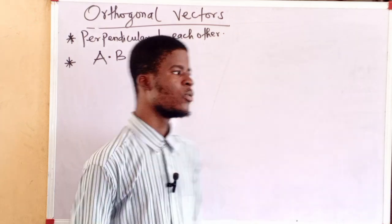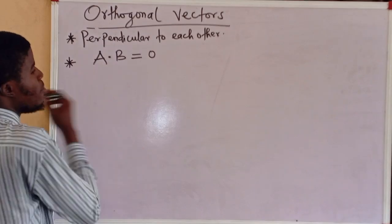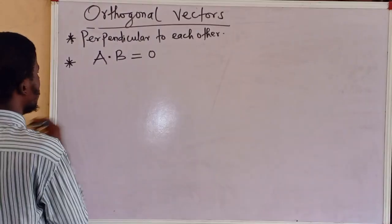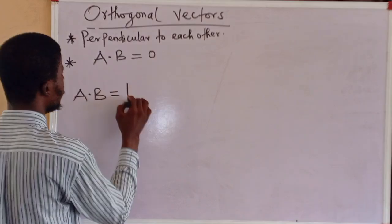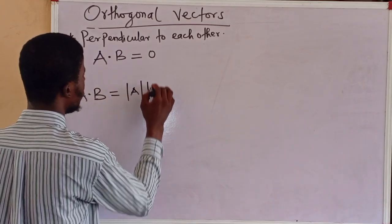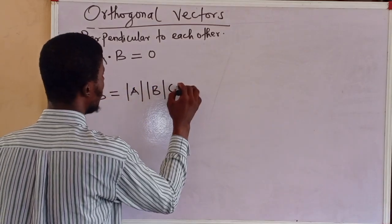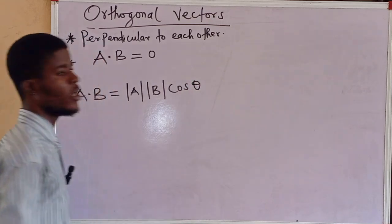We can actually prove it very easily. Remember we said that for dot product, the formula is A dot B equal to the modulus of A times the modulus of B times the cosine of the angle between them.